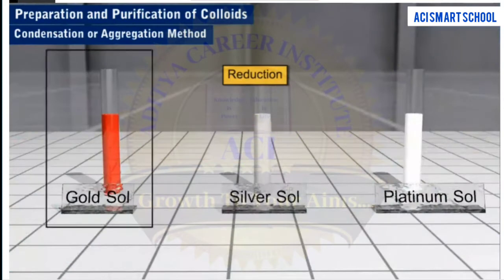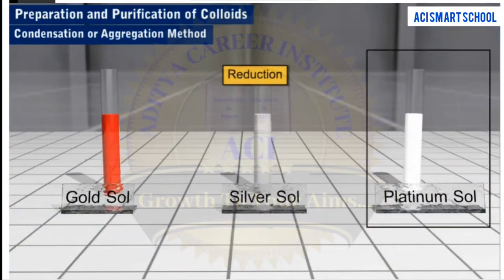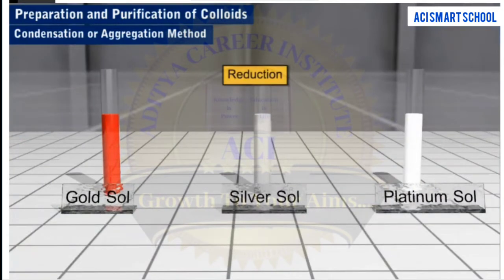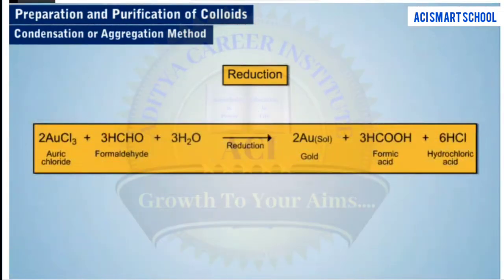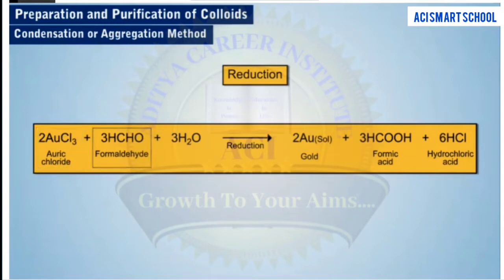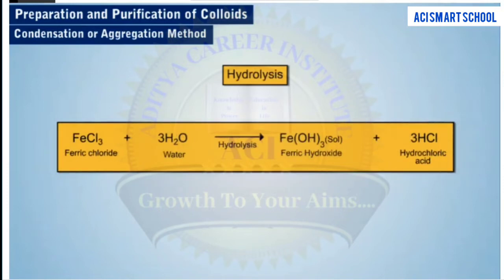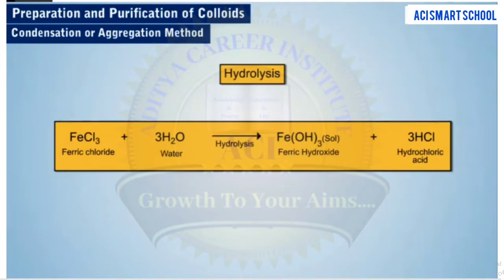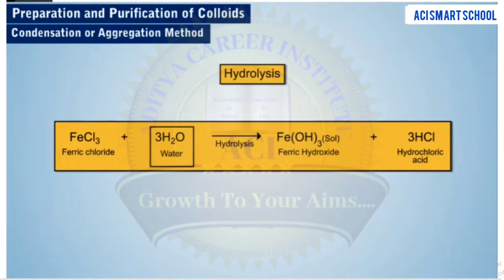A colloidal solution of sulfur can be prepared by oxidizing an acidic solution of hydrogen sulfide with an oxidizing agent like sulfur dioxide. Sols of gold, silver, and platinum can be obtained by the reduction of dilute solutions of their salts with a suitable reducing agent. For example, gold sol can be obtained by reducing a dilute aqueous solution of its salt with formaldehyde. Another reaction commonly used for the preparation of salts is the hydrolysis of the corresponding chlorides. For example, if a small quantity of ferric chloride is added to boiling water, a ferric hydroxide sol is obtained.